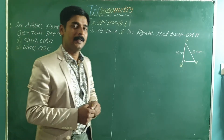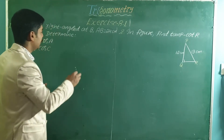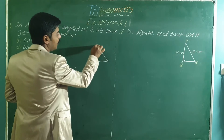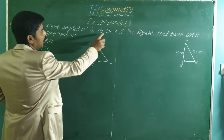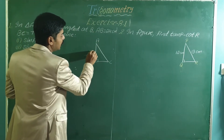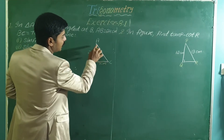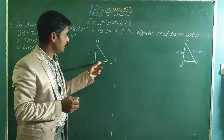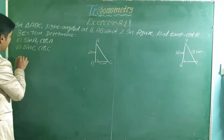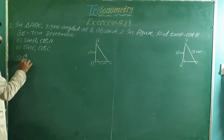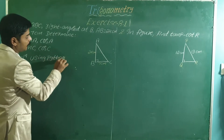We have studied how to solve this type of problem in the previous classes. First let us draw a right-angled triangle A, B, C. AB is equal to 24 cm and BC is 7 cm. First we need to find all the three sides. Since two sides are given, the third side you can find using the Pythagoras theorem.